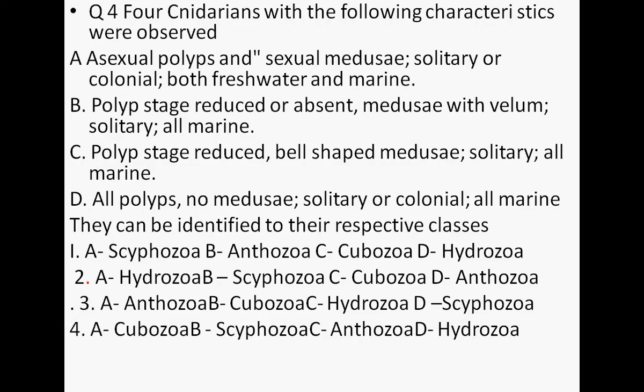Question four: four cnidarians with the following characteristics are observed. A has asexual polyps and sexual medusa, solitary or colonial, both freshwater and marine. B has polyp stage reduced or absent, medusa with velum, solitary or marine. C has all polyps, no medusa. A should be the Hydrozoa, and analyzing the alternates, in the second option A is Hydrozoa, and C is Scyphozoa.